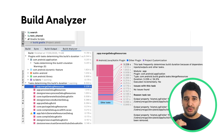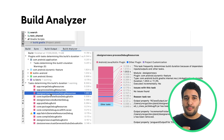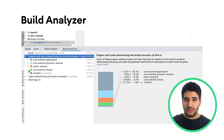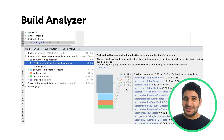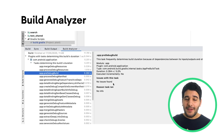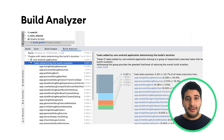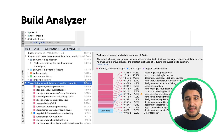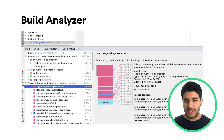After that, select View > Tool Windows > Build from the menu bar. Finally, in the Build window, open the Build Analyzer window. After Android Studio finishes building your project, click the Build Analyzer tab, or click the link in the right side of the Build Output window.